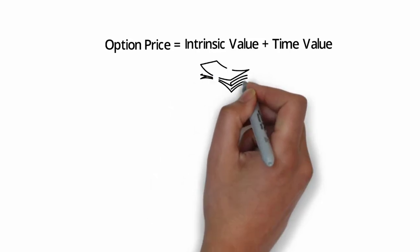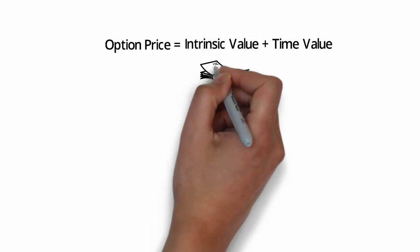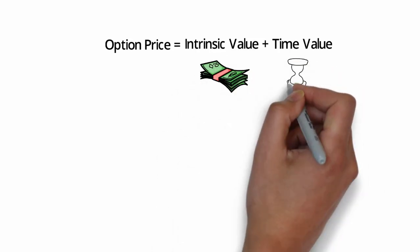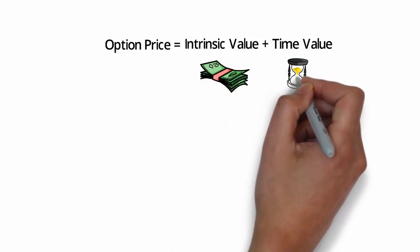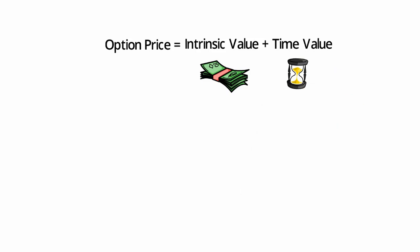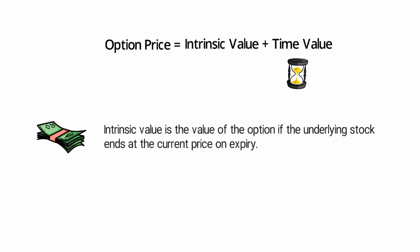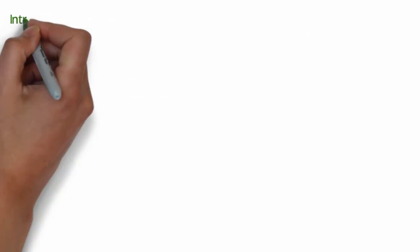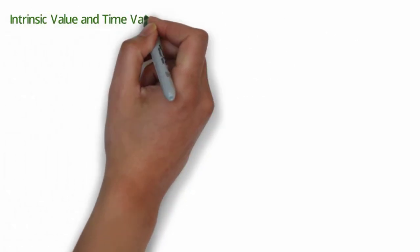The total price of an option is the sum of intrinsic value and time value. Intrinsic value is the value of an option if the underlying stock ends at the current price on expiry. So let's understand with an example.